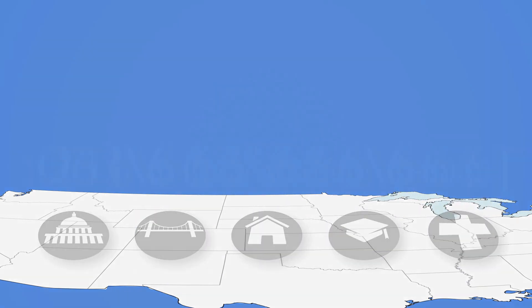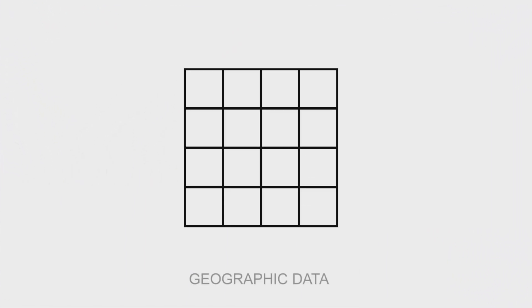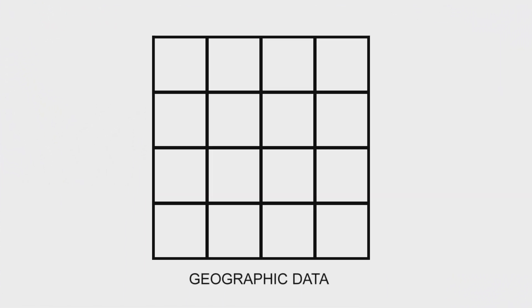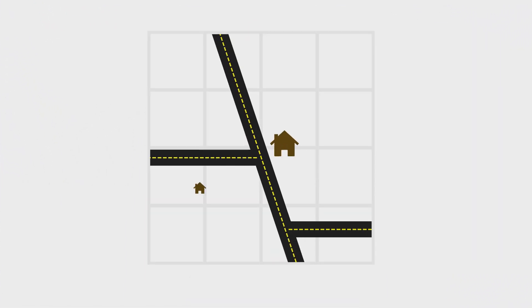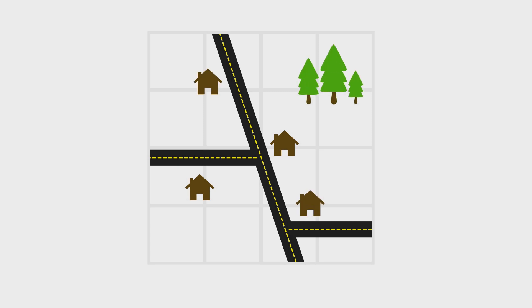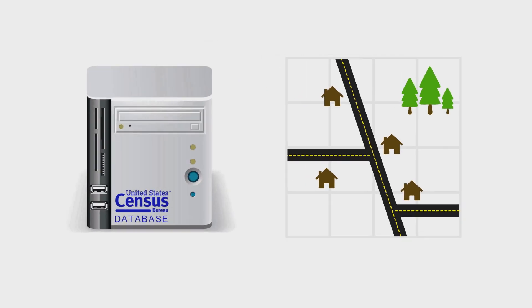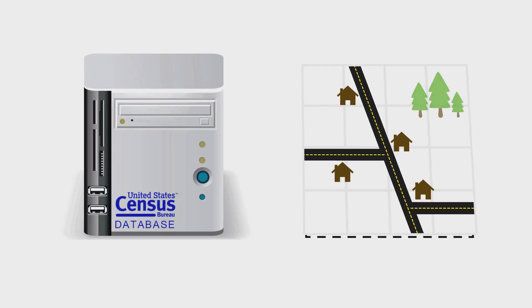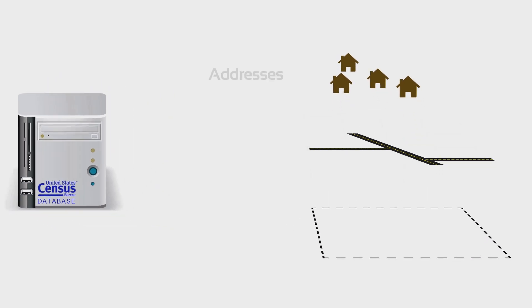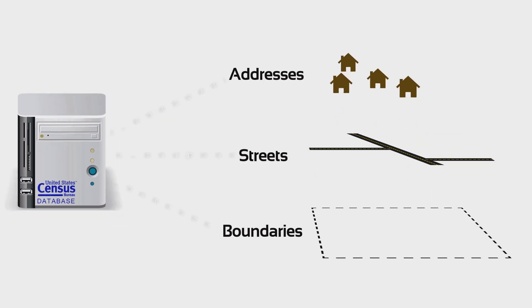But in order to collect up-to-date demographics, the Census Bureau needs correct geographic data. The Census Bureau's geography programs draw information from a geographic database. This database contains addresses, streets, and boundaries for the entire nation.